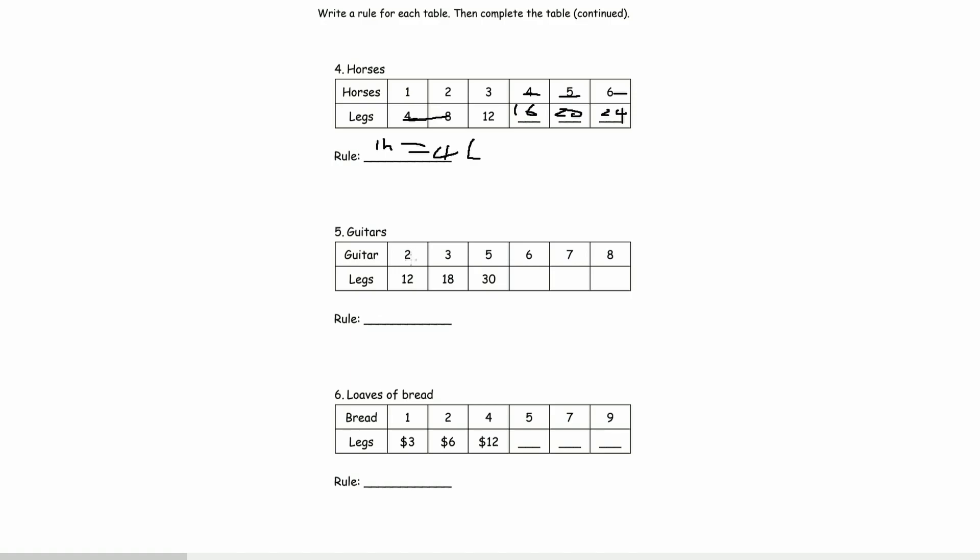And this one, we don't know what one guitar, how many legs a guitar has. So, if it has 2 guitars, and then it's 12. If it's 1, then it would be half of 12.